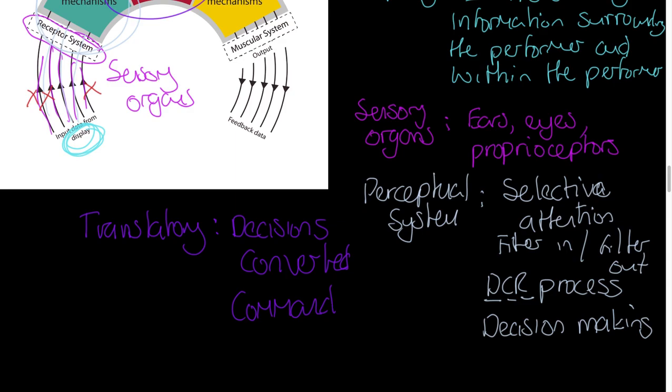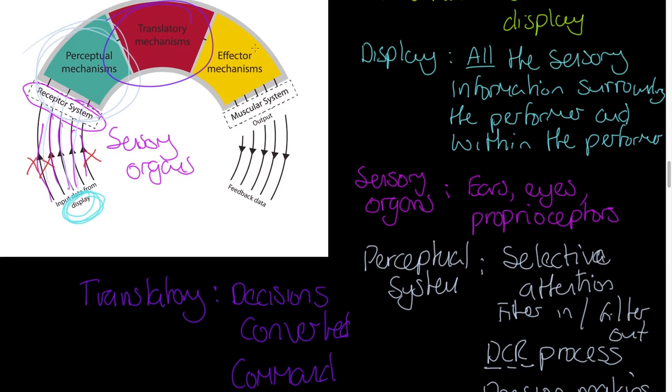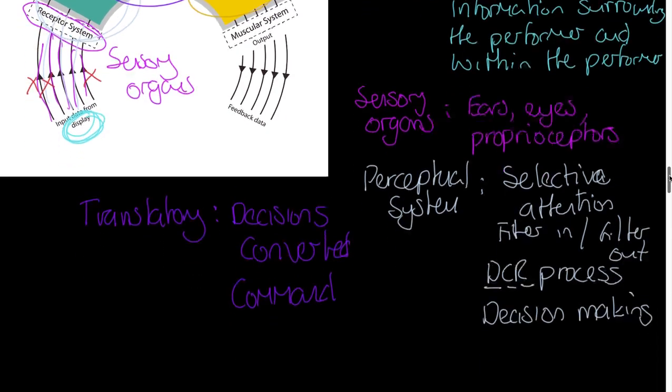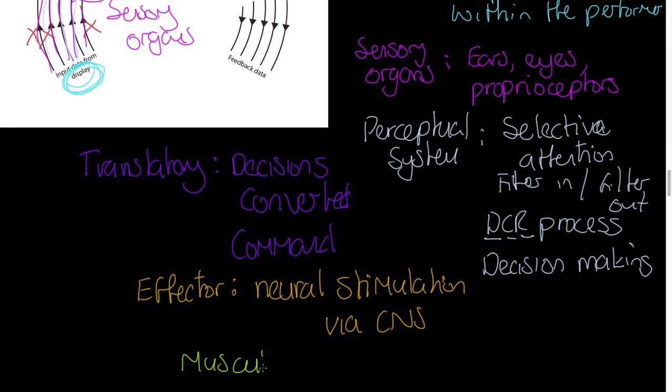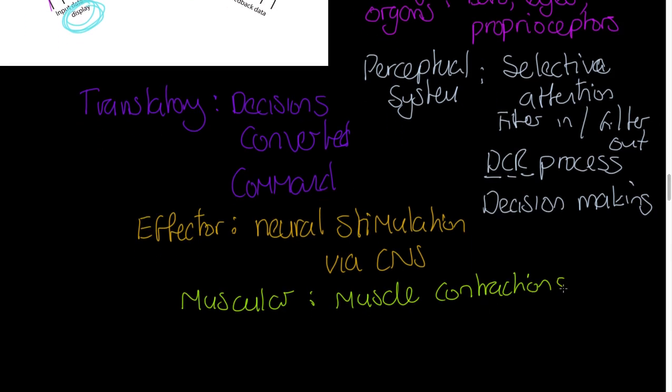The effector mechanism, let me choose a different colour, the effector, and you can see that up here, look, the effector mechanism. You've probably studied effector mechanisms in biology, I would imagine. But your effector mechanism here, we are talking about the neural stimulation, in other words, the nerve impulses to the muscle. Neural stimulation of the muscles via the CNS, the central nervous system. But of course, in order then to move, we've got the muscular system. And we should also consider this, by the way, the muscular system. This is also what we call output. It is muscle contractions.